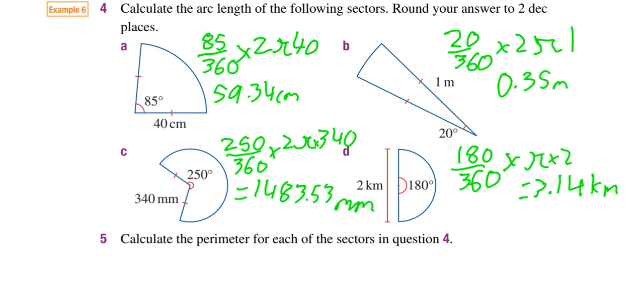Because we already have our answers for the curved part, we just need to add radiuses to that. So, for this first one over here, we've already got 59.34. We just need to add two lots of 40 centimeters to that, one lot for this side and one lot for that side. So, 40 and 40 is 80. 80 plus 59.34 will get you 139.34 centimeters.